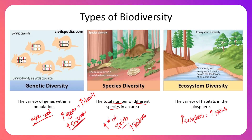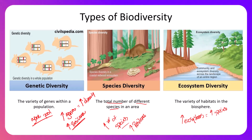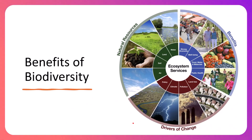All three — genetic diversity, species diversity, and ecosystem diversity — are the three levels of biodiversity we'll focus on in this class. All three are important, all operate at different levels, and all impact the world and humans in slightly different ways, but they are equally important when we talk about biodiversity. Speaking of importance, we're going to finish today's lecture by talking about some benefits that biodiversity provides to nature and to humans specifically.